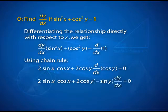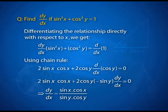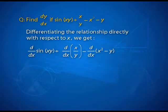Further, this becomes 2 sin x cos x plus 2 cos y, and now the derivative of cos y using the chain rule is minus sin y into the derivative of y with respect to x. From here, we separate out dy by dx. Rearranging, you get dy by dx as sin x cos x upon sin y cos y. So the chain rule actually plays a significant role in finding the derivatives of implicit functions.